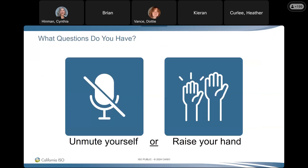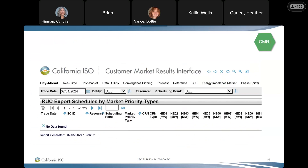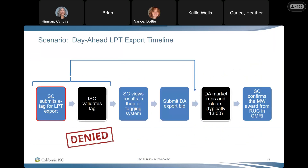Callie Wells with WPTS asked a general question: back on the slide where it says if tags are submitted similar to today's practices — even before the day ahead market runs and clears — they'll be denied. Can you remind me what the business case was? It seems that changing this practice would inundate the CAISO with all these e-tags at the same time, as well as other BAs that also have to approve them, causing a lot of headaches.